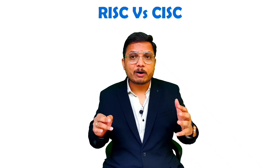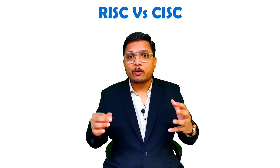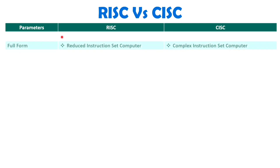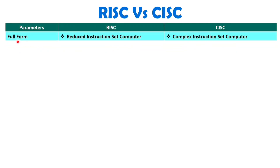After watching this video, you will have an exact idea about what is RISC, what is CISC, and what design philosophy is behind each. RISC is the reduced instruction set computer and CISC is the complex instruction set computer. With RISC you have fewer instructions, and with CISC you have many instructions along with complex ones.